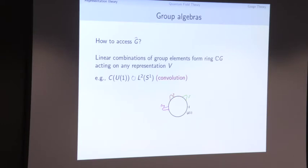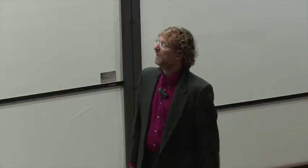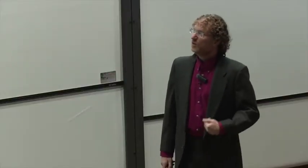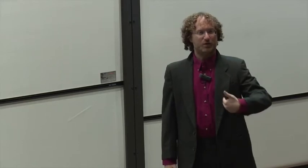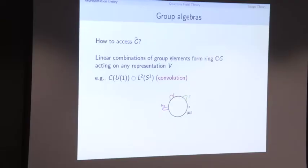For example, in the case of the circle, we can look at continuous functions on the circle — bump functions — and they act on all L² functions on the circle through the convolution product. Two bumps multiply together to a bump at the sum position on the circle. Whenever we have a representation of G, we get an algebraic structure: the representation is a module for this algebra.